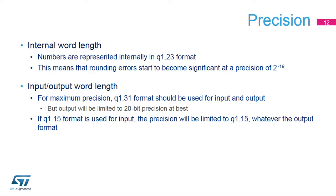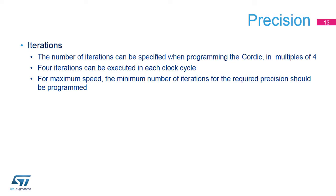Continuing Cordic iteration after the maximum precision has been reached will degrade the precision gradually. For maximum precision, Q1.31 format should be used for input and output. However, given the format implemented internally, the output is limited to 20-bit precision at best. If Q1.15 format is used for input, the precision will be limited to Q1.15 whatever the output format. The precision required depends on the number of iterations, which must be programmed in the field precision of the Cordic CSR register. The number of iterations equals the value programmed in this field multiplied by 4. For maximum speed, the minimum number of iterations for the required precision should be programmed. Note that for most functions, the recommended range for this field is 3 to 6.